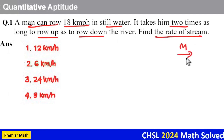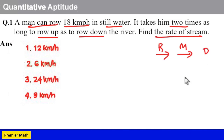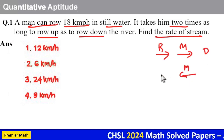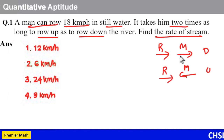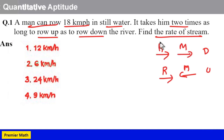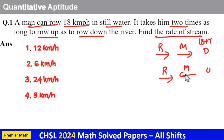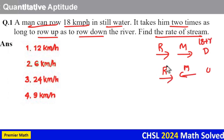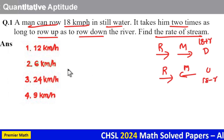When this man goes with the same direction of the river, it is called downstream. When this man goes against the direction of the river, it is called upstream. Downstream speed means man's speed in still water plus river speed, that is 18 plus r. Upstream speed is equal to man's speed in still water minus river speed, that is 18 minus r.